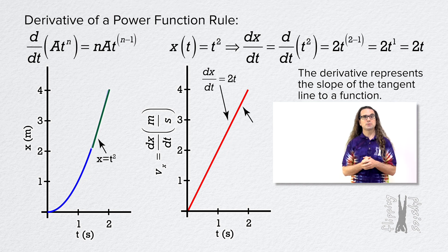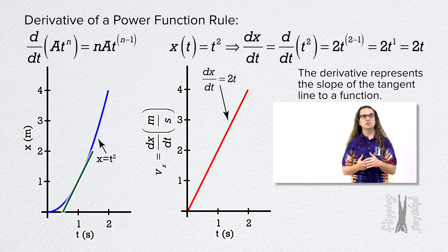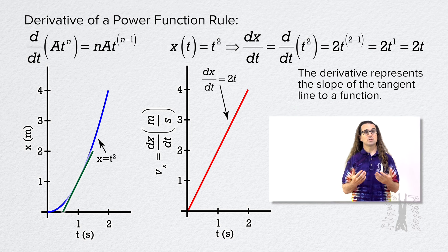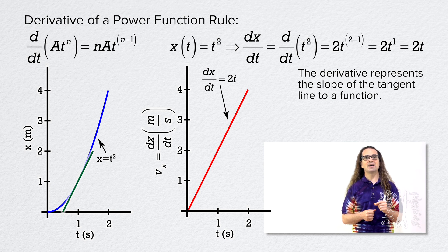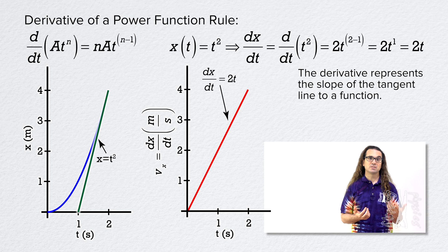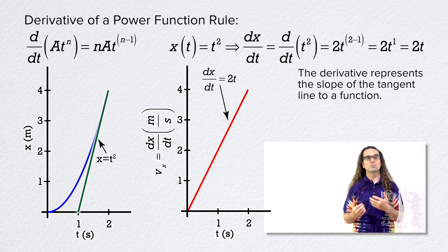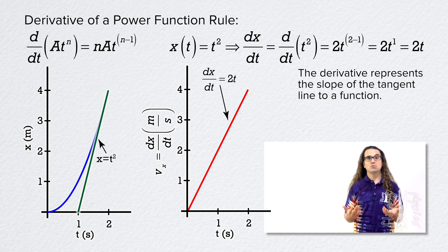We can look at two more specific points on our function. At time equals 1, the slope of position equals time squared equals rise over run, or 2 minus 0 over 1.5 minus 0.5, so the slope equals 2. And 2 times 1 also equals 2, so at time equals 1 the slope of the tangent line of our function equals the value of the derivative. We could do the same thing at time equals 2: the slope of position equals time squared equals rise over run, or 4 minus 0 over 2 minus 1, which is 4. And 2 times 2 equals 4, so at time equals 2, again the slope of the tangent line equals the value of the derivative. Because that is what the derivative represents.